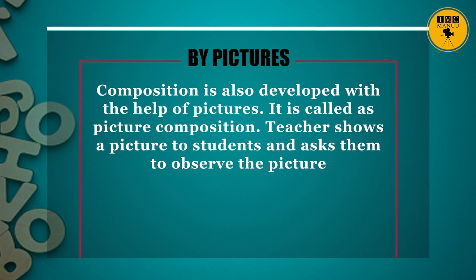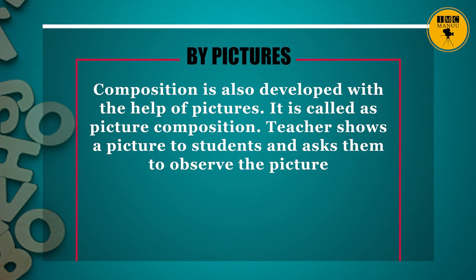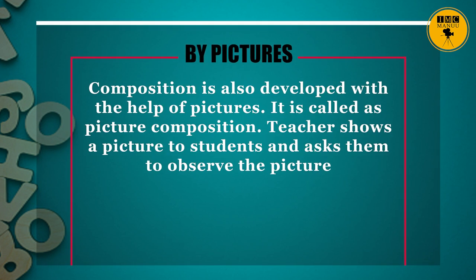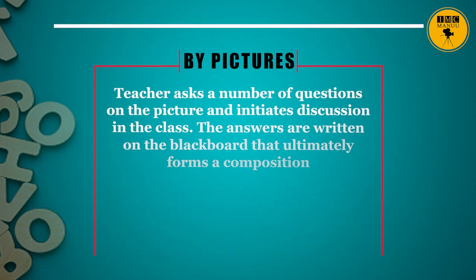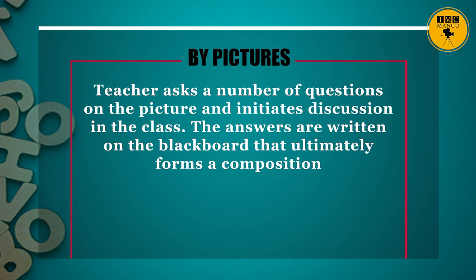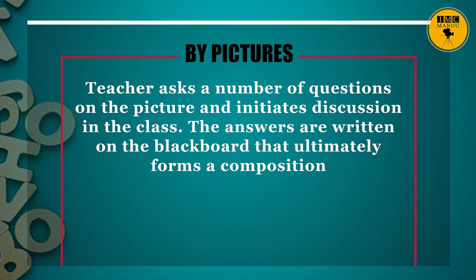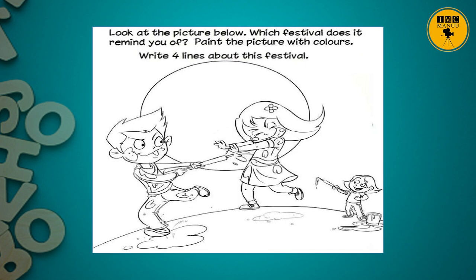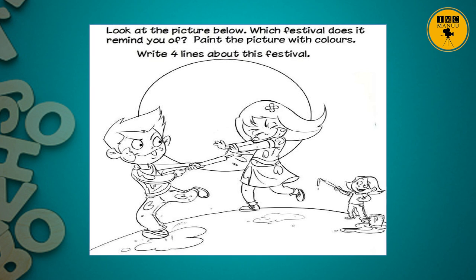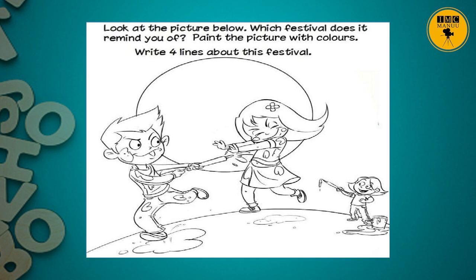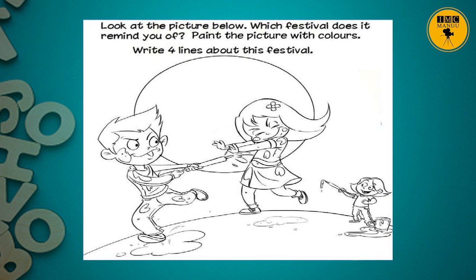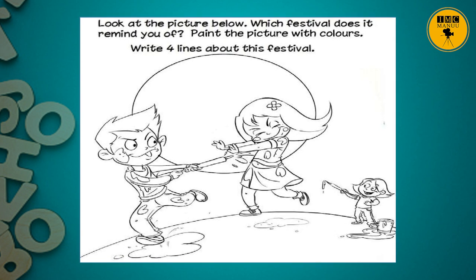Another technique of teaching guided composition is by pictures. Composition developed with the help of pictures is called picture composition. The teacher shows a picture to students and asks them to observe it, then asks a number of questions on the picture and initiates discussion in the classroom. The answers are written on the blackboard and ultimately form a composition. For example: look at the picture, which festival does it remind you of? Paint the picture with colors and write four lines about this festival.